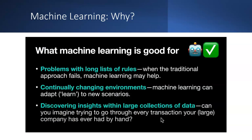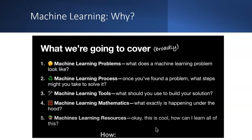Machine learning is beneficial when you have a long list of rules, a continuously changing environment that machine learning can adapt to, or patterns to discover within large collections of data. For example, it would be very difficult to manually go through every transaction of a large company — machine learning can easily do that for us.